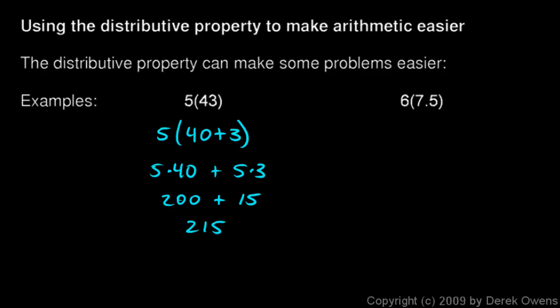This next one is very similar. 6 times 7.5. And I'll write it out to show you the thought process. 6 times 7.5 could be thought of as 6 times 7 plus 0.5, because the 7.5 is exactly that, 7 plus 0.5. So let's distribute the 6. 6 times 7 plus 6 times 0.5. And both of these are pretty easy. 6 times 7 is 42. And 6 times 0.5, that's 3, because 0.5 is a half. Just think of it as half of 6. So that's 3. And then 42 plus 3 is 45. And that's our answer.